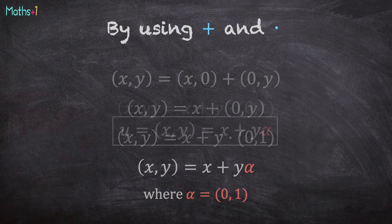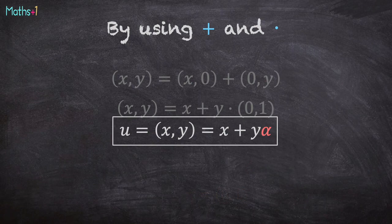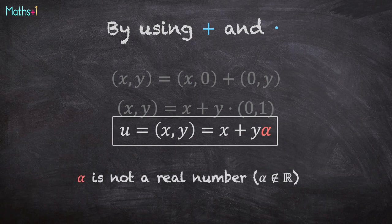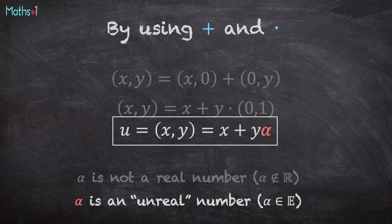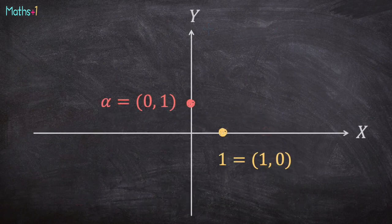We obtain this very interesting formula: u is (x, y) is x plus y alpha. Alpha is not a real number. Alpha is an unreal number. You can locate alpha on the plane.